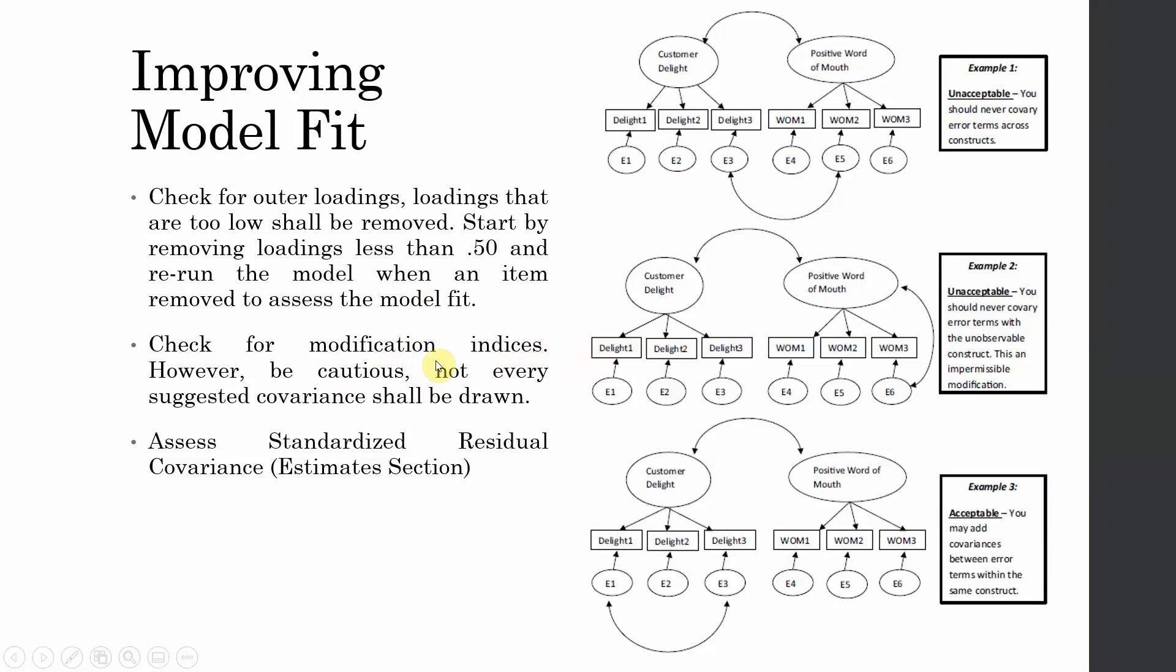How do you use modification indices? Everything that AMOS will suggest you, you won't draw covariances between those particular indicators or error terms or indicators and latent variable.